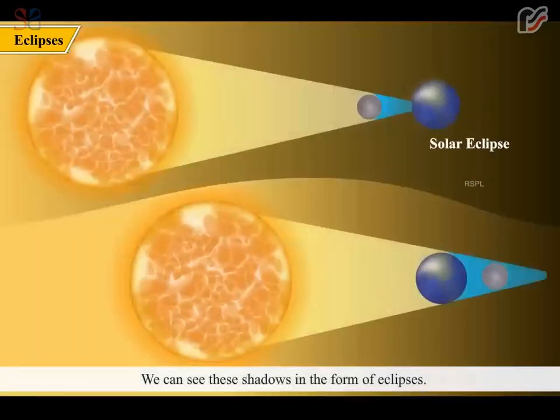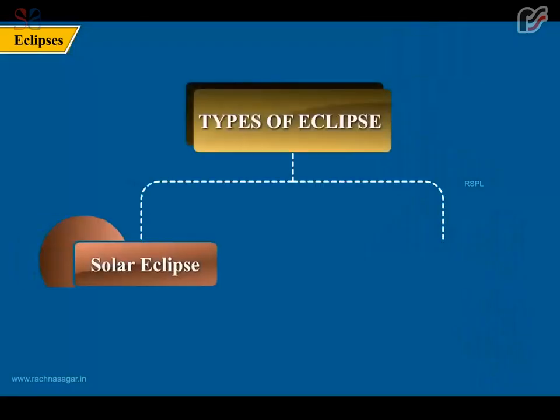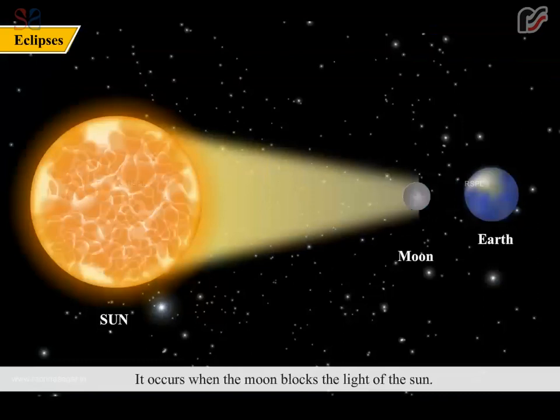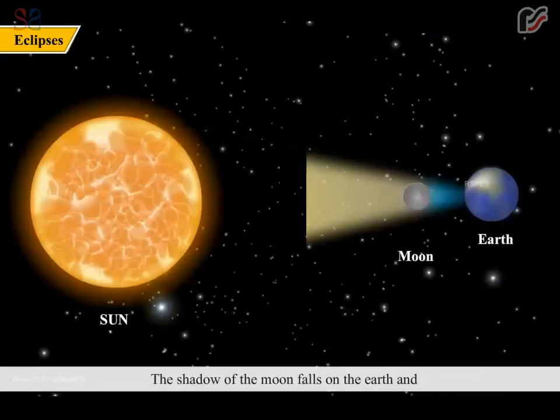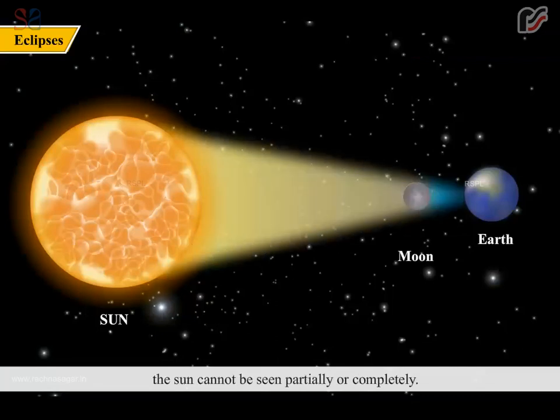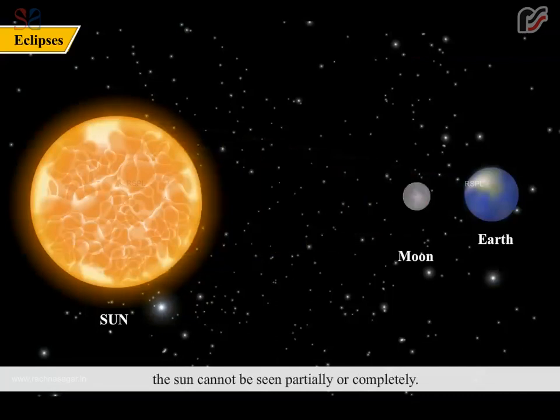We can see these shadows in the form of eclipses. There are two types of eclipses. Solar eclipse and lunar eclipse. Solar eclipse occurs when the moon blocks the light of the sun. The shadow of the moon falls on the earth, and the sun cannot be seen partially or completely.